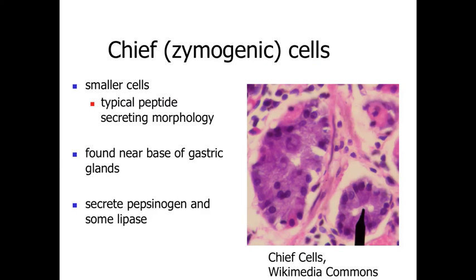The second type of cells are the chief cells, or zymogenic cells. These tend to be found deeper within the gastric glands, so you'll have the reddish or pinkish parietal cells towards the top and more basophilic, bluer-staining chief cells down towards the base of the glands. Chief cells have the typical morphology of a protein-secreting cell — basal basophilia, lots of rough endoplasmic reticulum in the middle portion, and secretory granules towards the apex. They produce pepsinogen as well as a small amount of lipase.